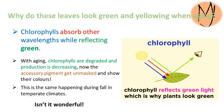Have you ever thought why leaves look green and yellowing when aging? Chlorophylls absorb other wavelengths while reflecting green, and that's why we can see leaves in green. With aging, chlorophylls are degraded and production is decreasing, so the accessory pigments get unmasked and show their colors. This is the same happening during fall in temperate climates.